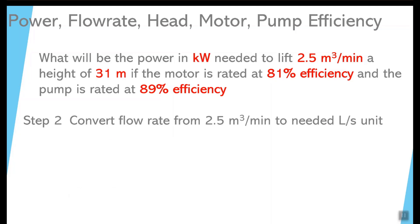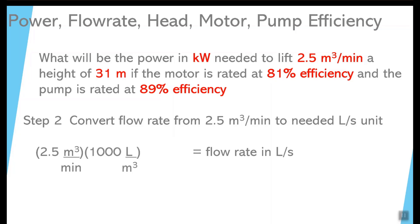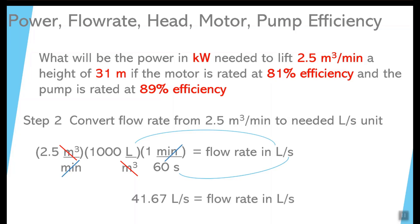Before we can plug all those numbers into the big formula, we have to do a conversion from cubic meters per minute to liters per second. First, convert cubic meters to liters by multiplying by 1,000 — the cubic meters cancel out, giving 2,500 liters per minute. Then divide by 60 because there are 60 seconds in one minute. The units cancel out, leaving liters on top and seconds on the bottom, giving approximately 41.67 liters per second.